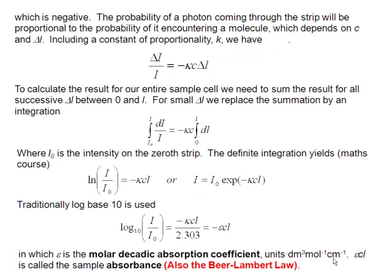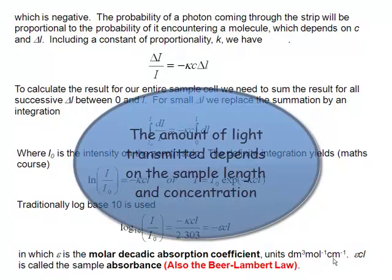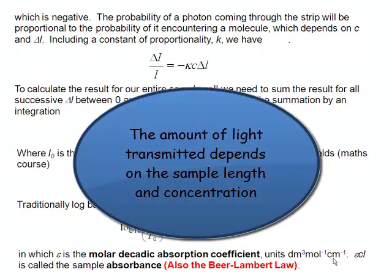So in general, what is the intensity, or the relative light transmitted, going to depend upon? Well, it's going to depend upon whether or not the photon bangs into a molecule as it goes through the sample. If it doesn't bang into a molecule, then it's not going to be absorbed. Therefore, our delta I over I depends on the concentration of the sample. And also, it depends on delta L.